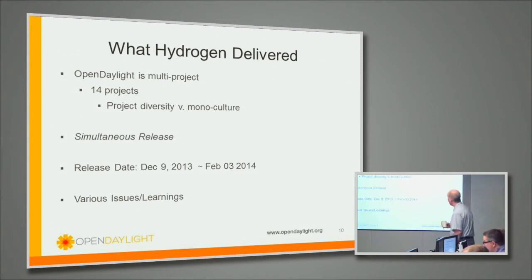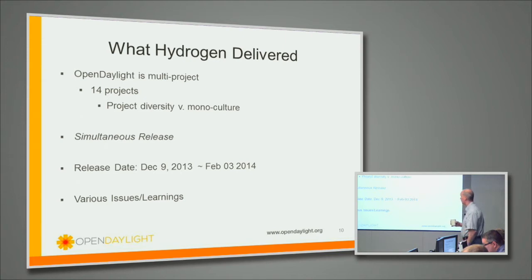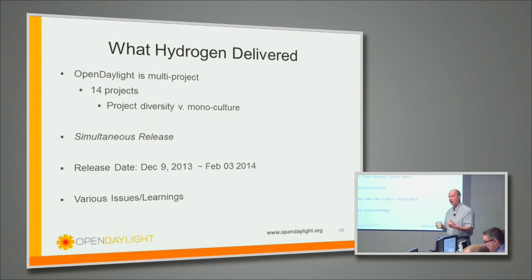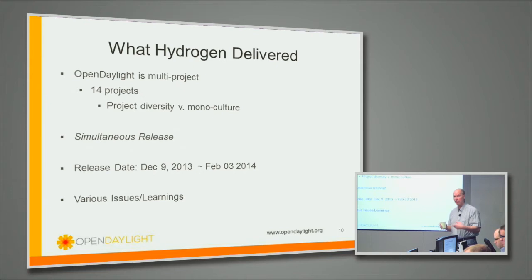What we actually got was 14 projects: the controller was one, and then there were 13 others. There was pretty good diversity across the projects. One of the metrics you want to take for an open source project is the diversity of committers. The controller wasn't that good — that was kind of ugly and we need to work on that. We had the simultaneous release — all these things got released at the same time, with artifacts cut. The release date went from December 9th to around February 3rd, which was conveniently the day before the Summit.